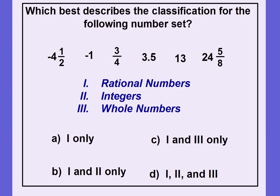Our last one: which best describes the classification for this number set? The choices are 1) rational numbers, 2) integers, or 3) whole numbers. We can tell right away they're not all whole numbers because we have negative 1, which is an integer. But there are also parts in the set, so they're not all integers either. That leaves rational numbers only — the correct answer is A. Nice job, Bobcats.